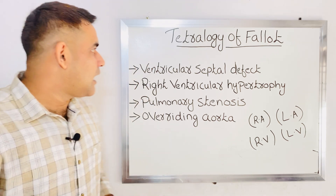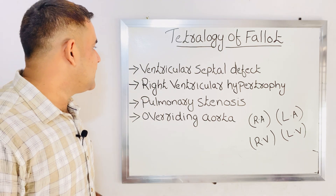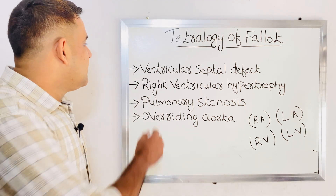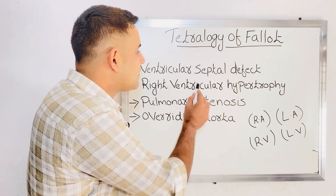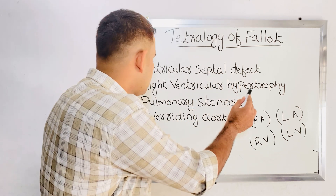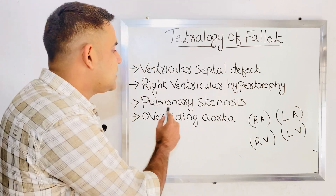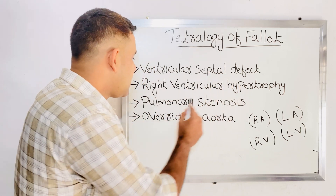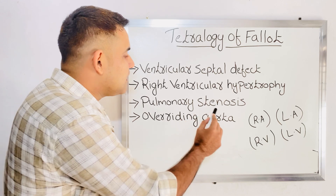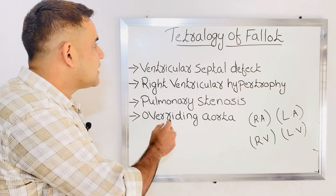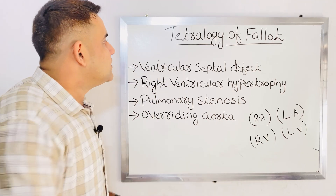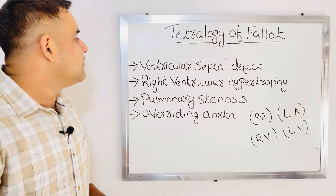Under Tetralogy of Fallot, mainly: ventricular septal defect, right ventricular hypertrophy, pulmonary stenosis, and overriding aorta. These four conditions are coming under Tetralogy of Fallot.